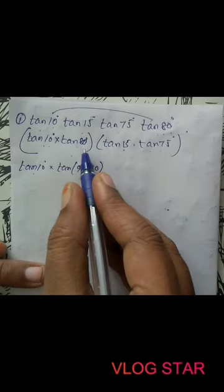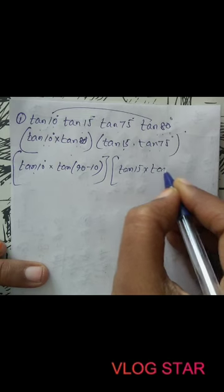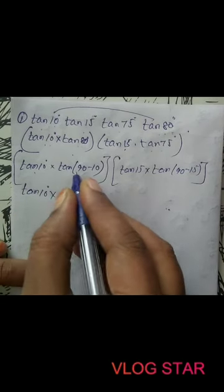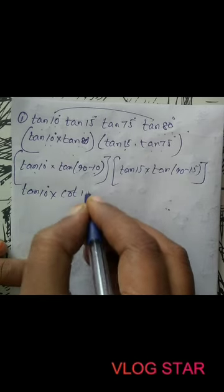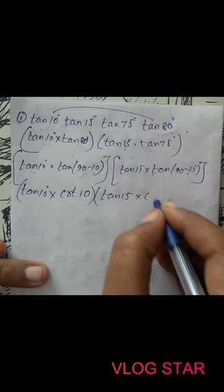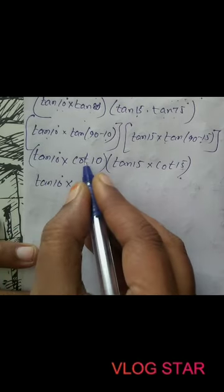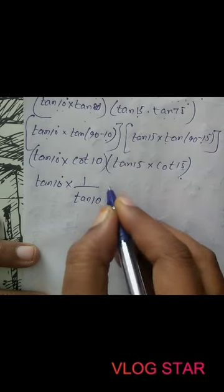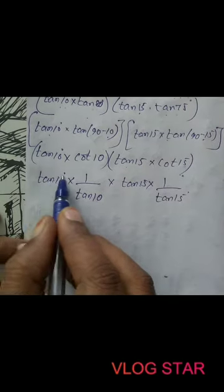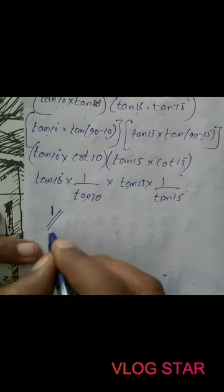And tan(75°) can be written as tan(90° − 15°). Using the identity tan(90° − θ) = cot(θ), we get cot(10°) and cot(15°). Since cot is the reciprocal of tan, tan(10°)·cot(10°) = 1 and tan(15°)·cot(15°) = 1. So the final answer is 1.